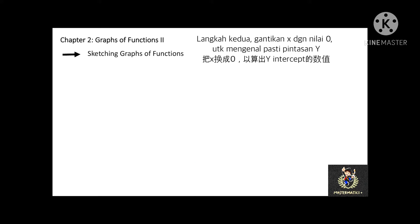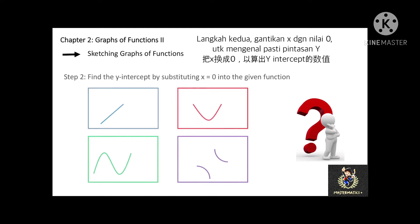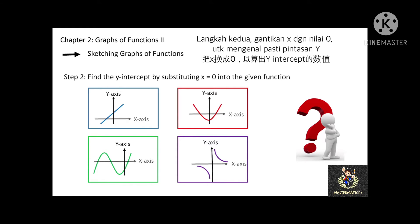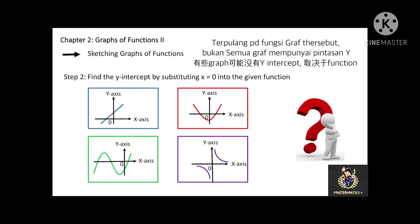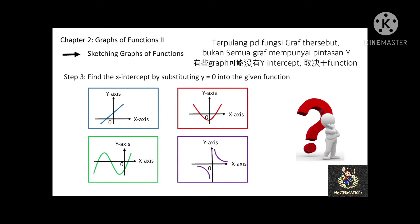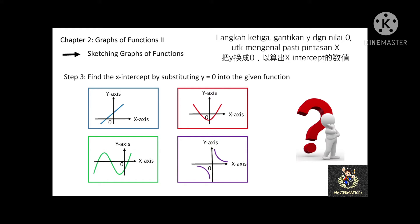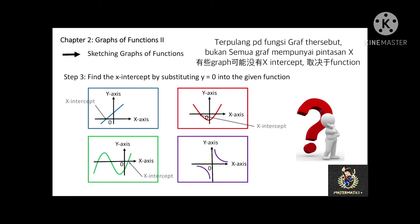After you identify the shape of your graph, step 2 is to identify the y-intercept value by substituting x with 0. Depending on the function, some graphs may not have a y-intercept. After the y-intercept is identified, the next step is to identify the x-intercept by substituting y with 0. Also depending on the function, some graphs may not have an x-intercept.